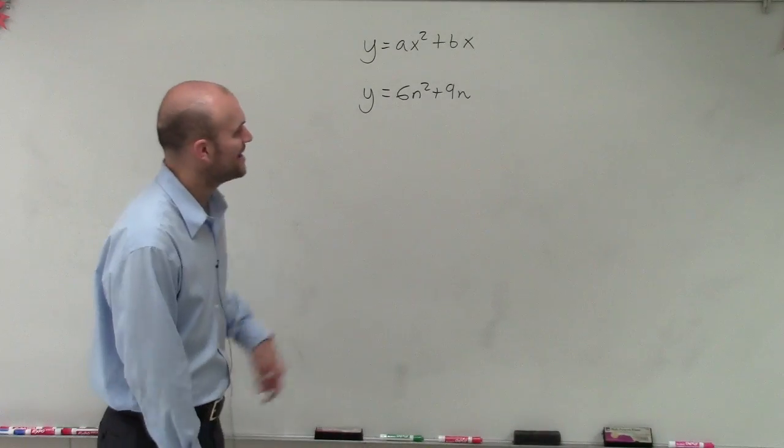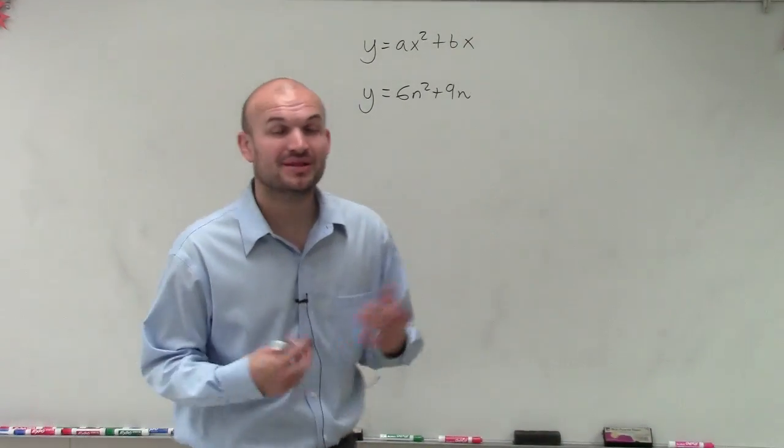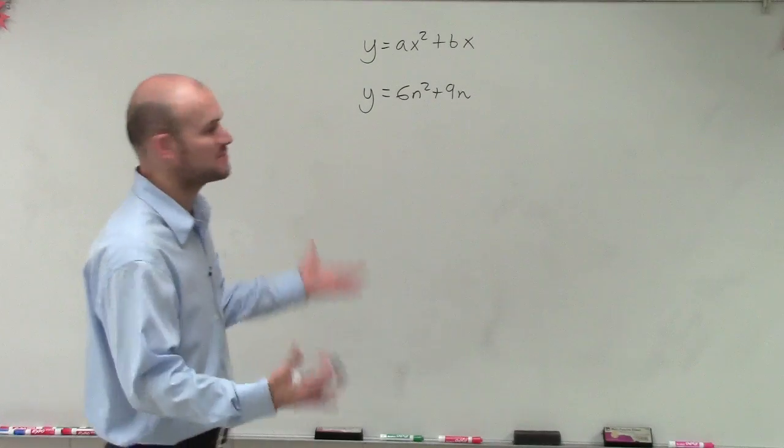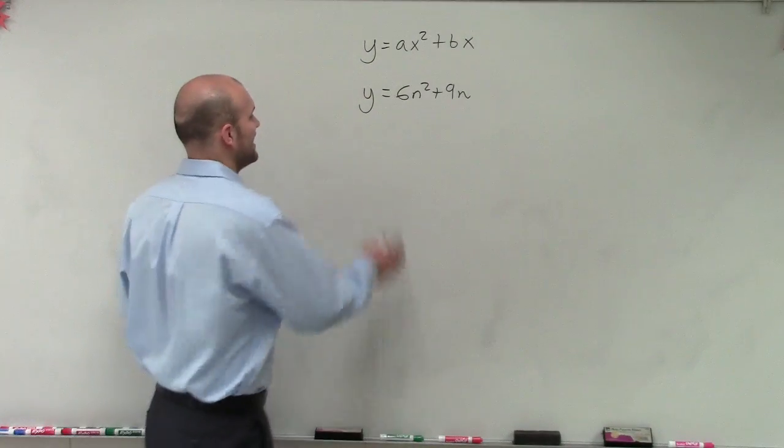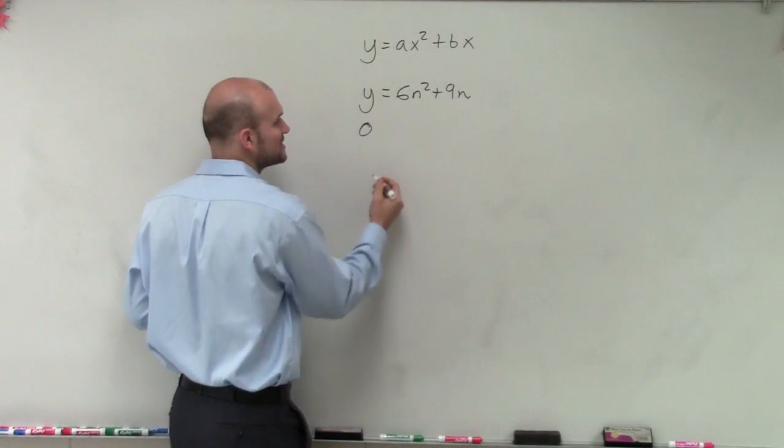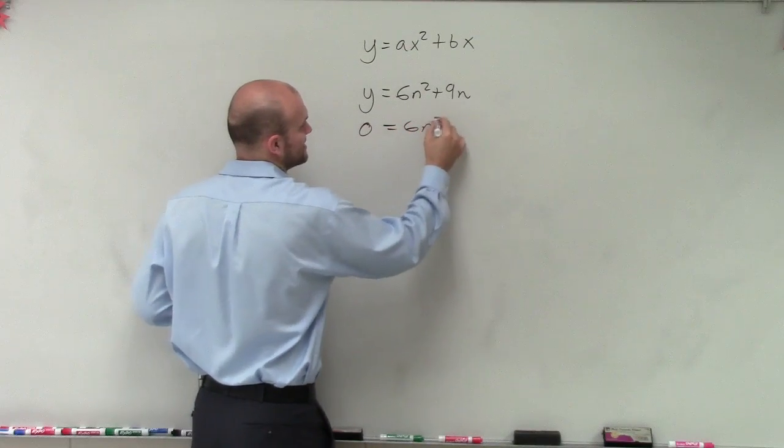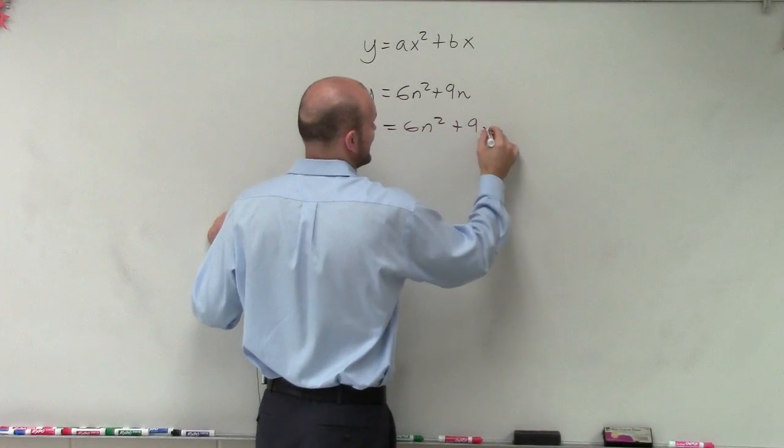I'm going to use brown. So y equals 6n squared plus 9n. And what we're doing is we're working on solving this by factoring. And so to solve this, we're going to convert this to 0 equals 6n squared plus 9n.